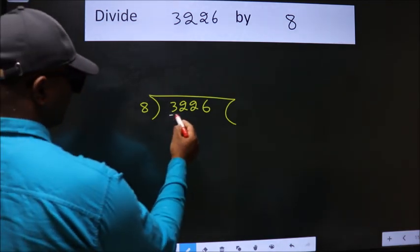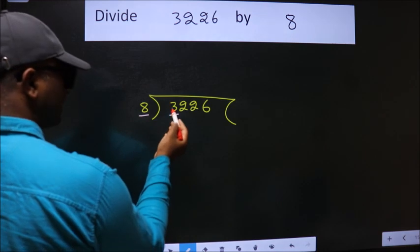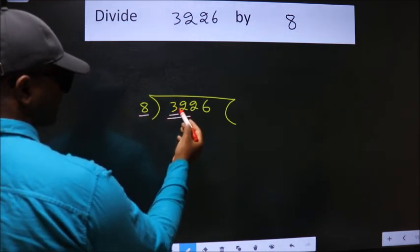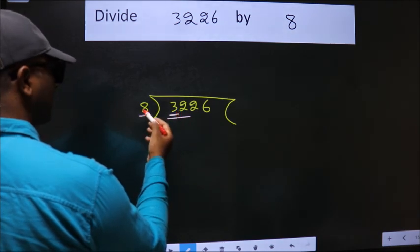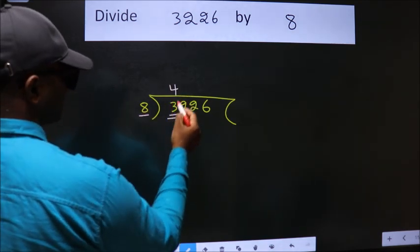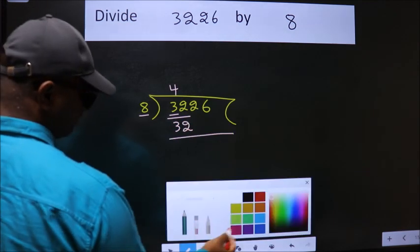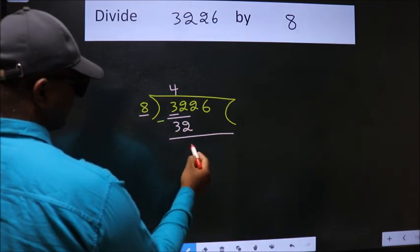Here we have 3. Here 8. 3 is smaller than 8. So we should take 2 numbers, 32. When do we get 32 in 8 table? 8 fours 32. Now we should subtract. We get 0.